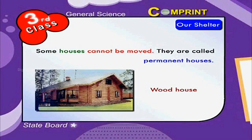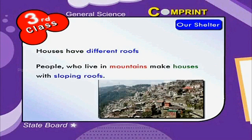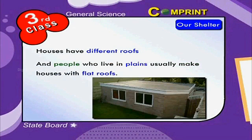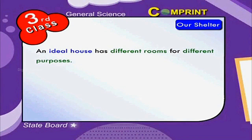Some houses are also made of wood, called wood houses. Houses have different roofs. People who live in mountains make houses with sloping roofs, and people who live in plains usually make houses with flat roofs.